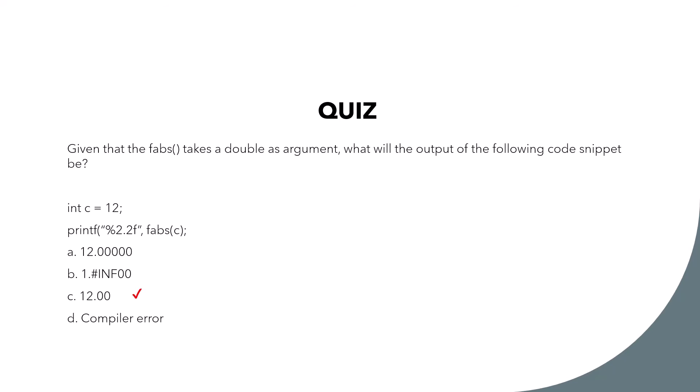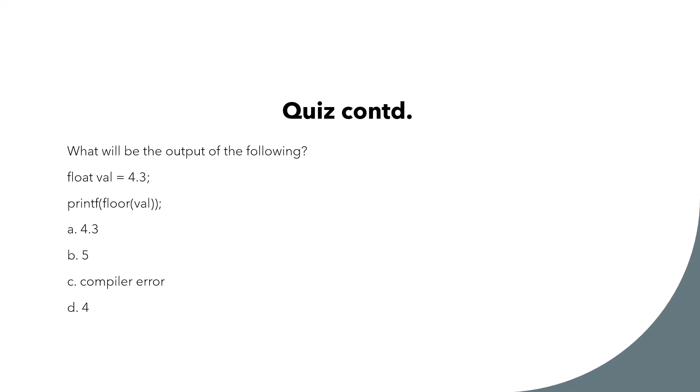What will be the output of the following? Float val equal to 4.3, printf floor of val. This one is going to give us a compiler error because there is no format specifier in the printf call.